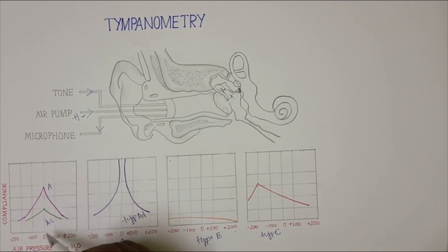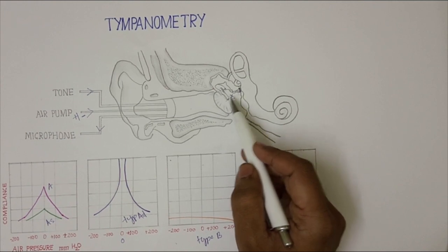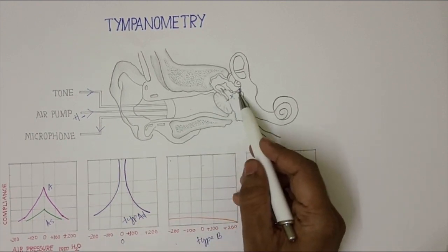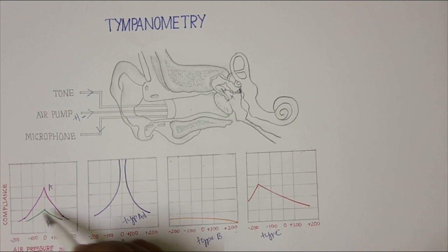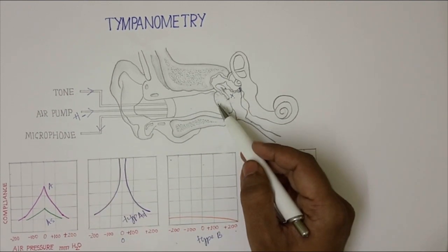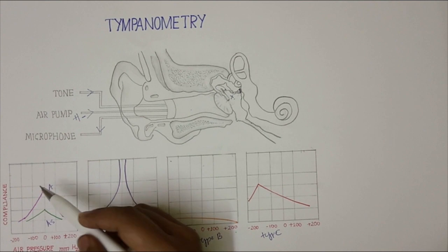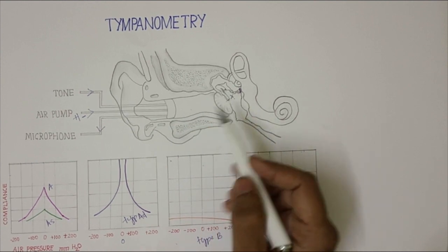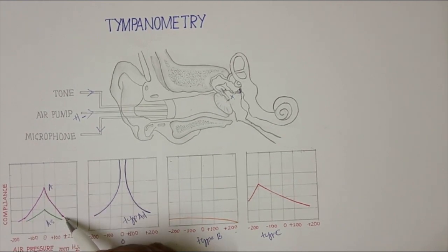In the Type A tympanogram, the compliance is seen at its maximum at zero pressure — that is, ambient pressure — when the air pressure is equal on either side of the tympanic membrane. At positive pressure, when the pressure is more, you are pushing the tympanic membrane inside, producing a stiffer system, so it does not show much compliance. As you move towards ambient pressure, the tympanic membrane returns to its original position, showing more compliance and vibrating more effectively. When negative pressure is applied, the tympanic membrane is pulled outward, so compliance decreases again. This type of curve is seen in a normal middle ear.